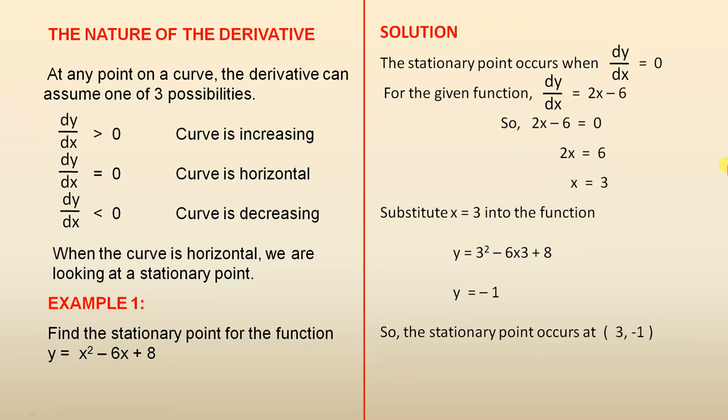If dy/dx equals 0, the curve is horizontal. And if dy/dx is less than 0, the curve is decreasing. When the curve is horizontal, we are looking at a stationary point.